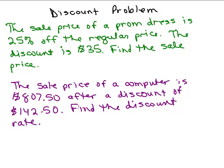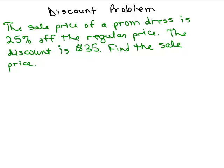We're going to do the following two discount problems on this video. So here's the problem. The sale price of a prom dress is 25% off the regular price. The discount is $35. Find the sale price.